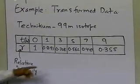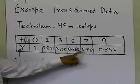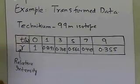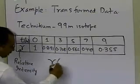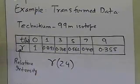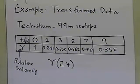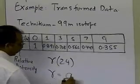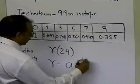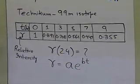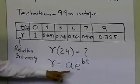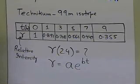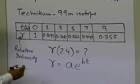You can already see that around about six hours you're losing about half of it, confirming the half-life of technetium-99M is six hours. But let's go ahead and figure out what the relative intensity is at 24 hours — does it go down very low so that the patient is not worried about having radioactive material in their body? We are going to use the exponential model with transformed data to do the regression.